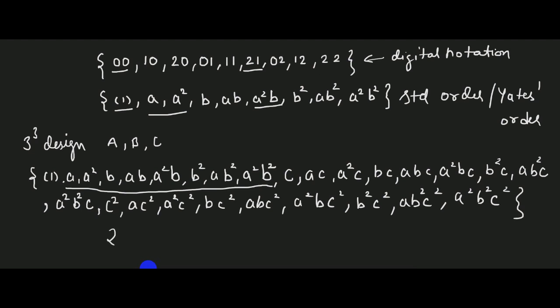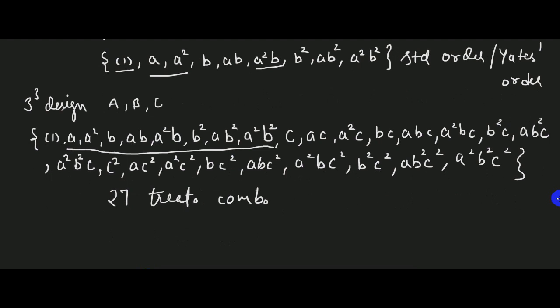This way we have listed all 27 treatment combinations of a 3 raised to 3 factorial design. These treatment combinations also denote the sum of all the observations made at the same treatment combination. For example, c also denotes the sum of all the observations made at the treatment combination c, and a² denotes the sum of all the observations made at the treatment combination a², i.e., when factor A was at high level and factors B and C both were at low level. These yields or treatment combinations can be used to construct the various main effects and interaction effects for 3 level factorial design, which we will discuss in our next video.